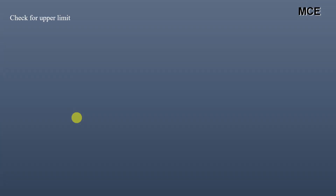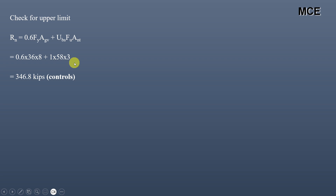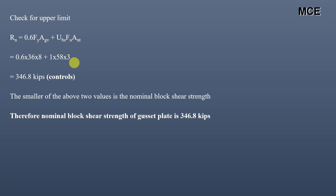We check the upper limit: Rn = 0.6·Fy·Agv + Ubs·Fu·Ant = 0.6 × 36 × 8 + 1 × 58 × 3 = 346.8 kips. This value is smaller than 452.4 kips, so the nominal block shear strength of this gusset plate is 346.8 kips.